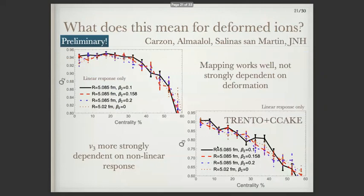So what does this actually mean for deformed ions? Do we get similar mapping when comparing different deformations? The good news is they are fairly similar. For the isobar run, we ran different beta 2 deformations and a few different radii, and we get very similar mapping across the board — talking about very tiny differences for V2. This is only for linear response, and V3 also receives very similar results. So the deformation doesn't seem to play a huge role once we compute our Pearson coefficient, which is good news.